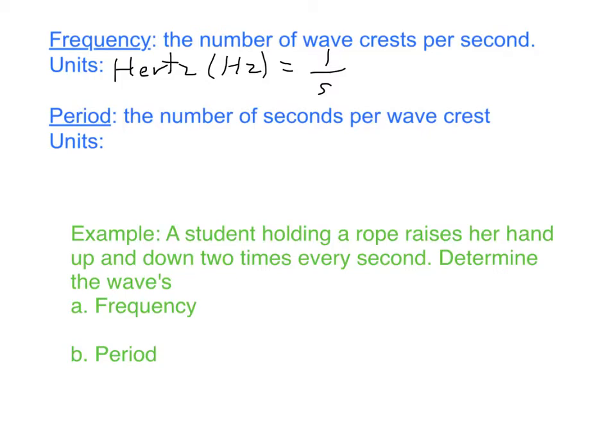So how many waves there are per second, and when we say per second, that means seconds on the bottom. Period is the inverse of this—it's the number of seconds per wave crest, so it is measured in just units of seconds.